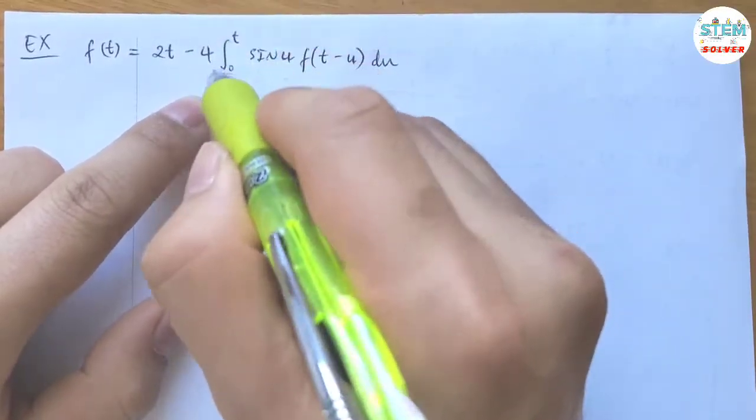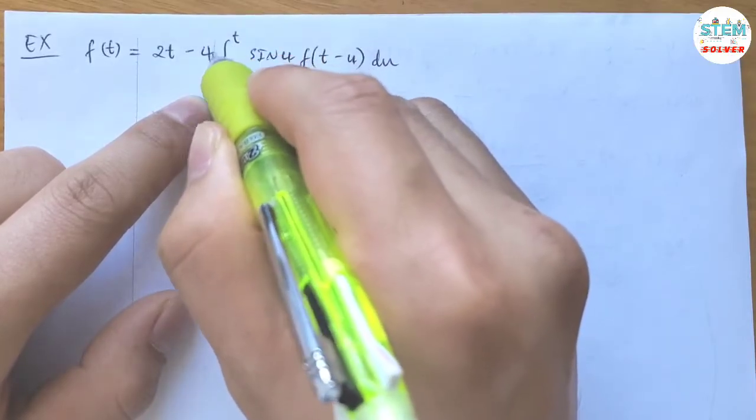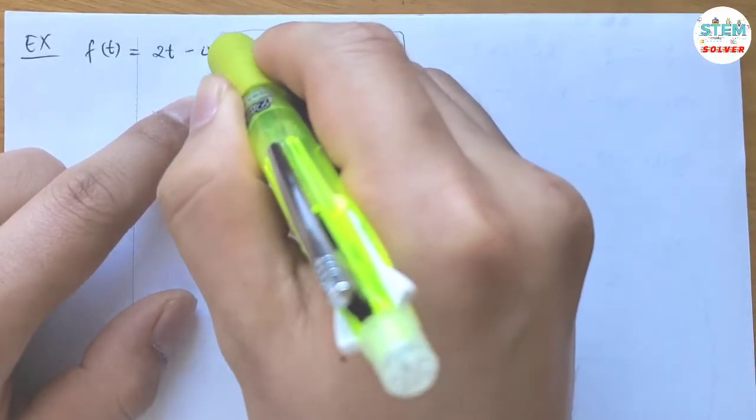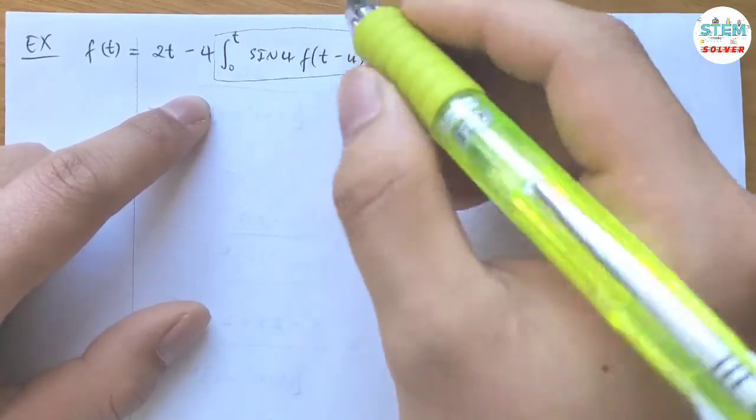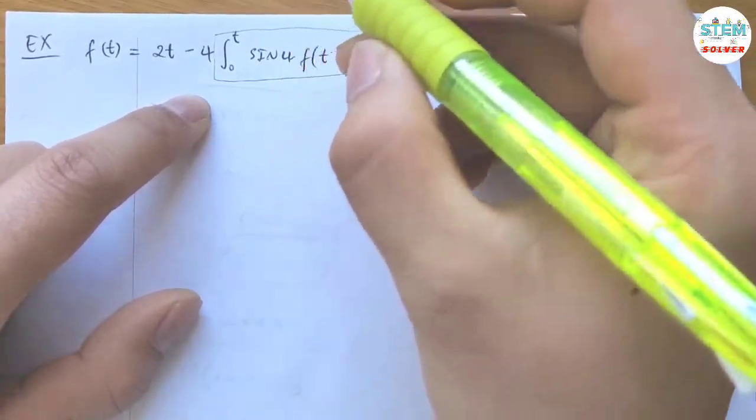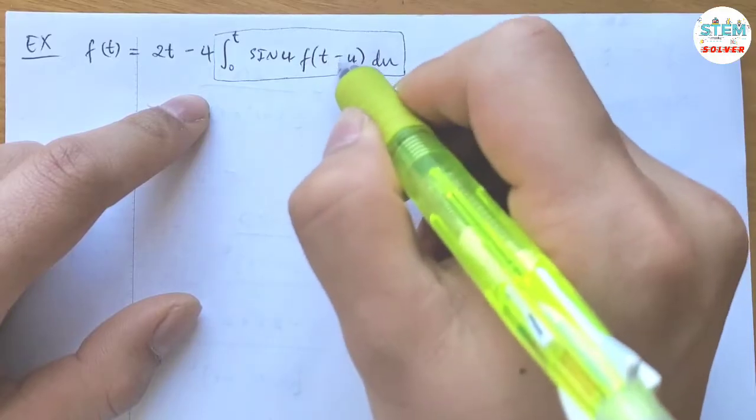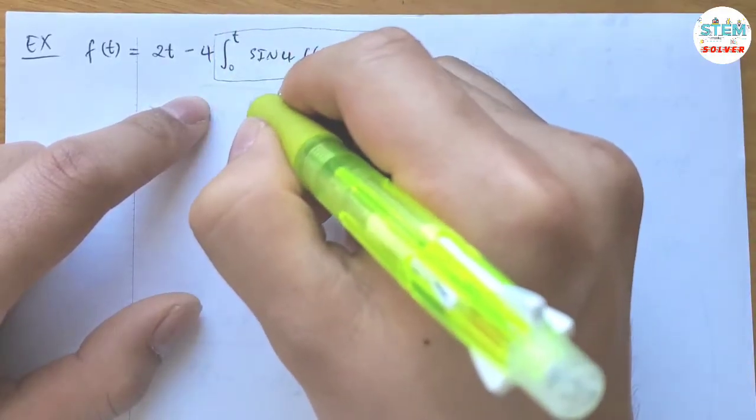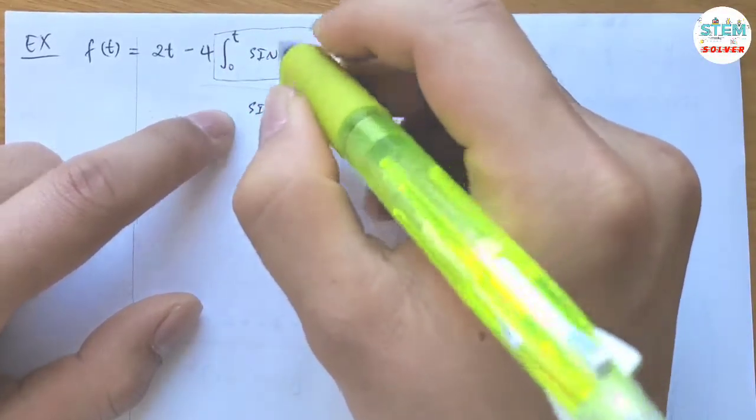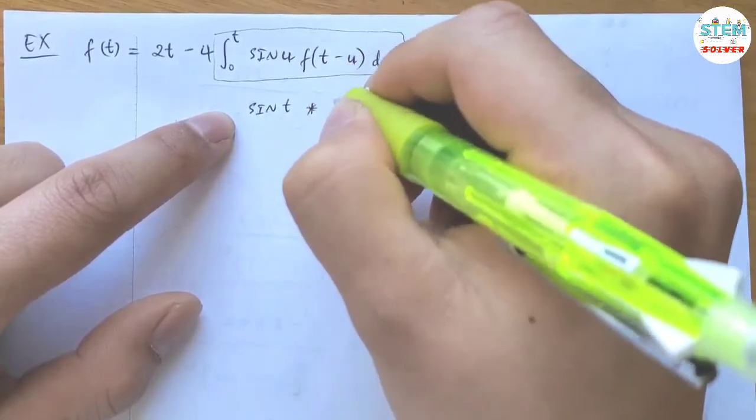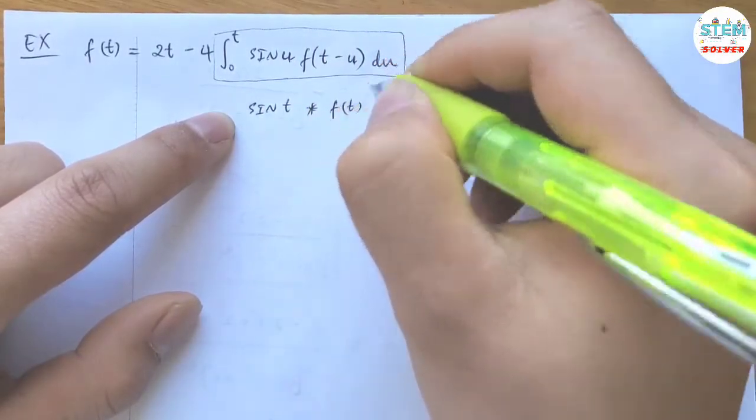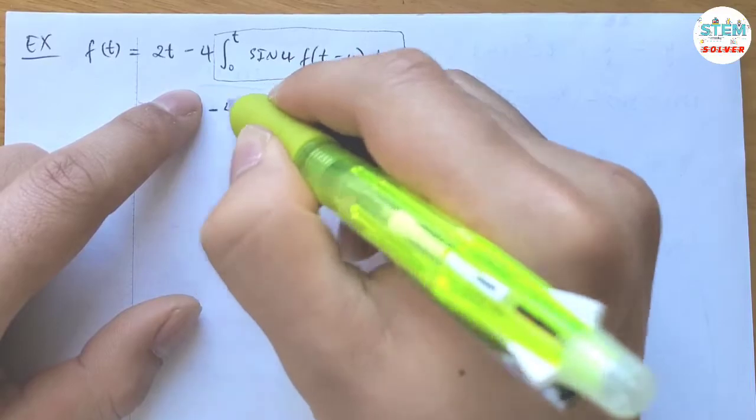Before that, I'm going to rewrite this because this is a different way of writing the convolution. You can see we have the function in terms of u and the function in terms of t minus u. So this becomes ψ(t) convoluted with f(t). And don't forget we have the negative 4 in front.